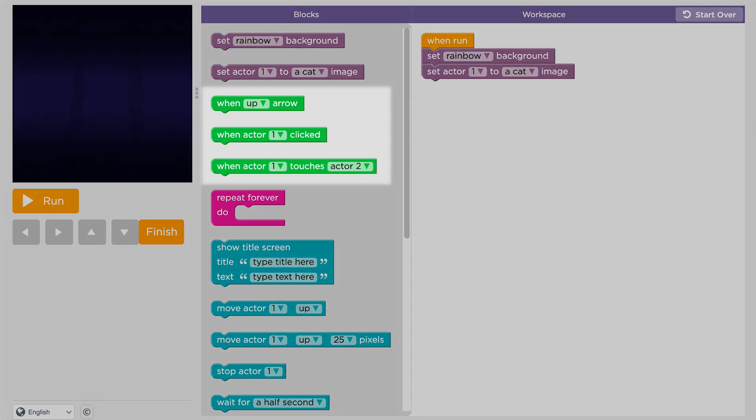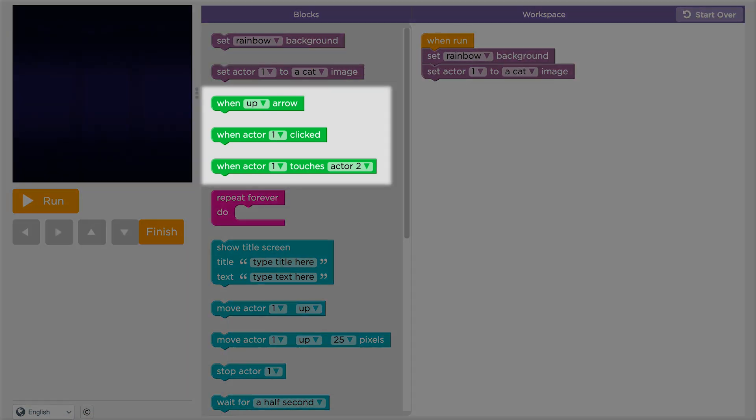To make your program react when someone plays with it, you're going to use events. These blocks are called event blocks.